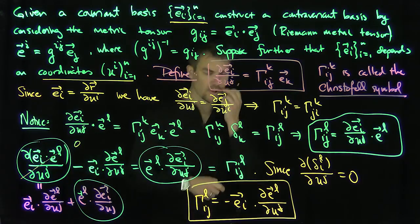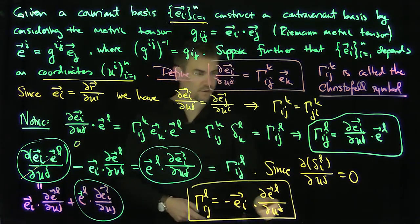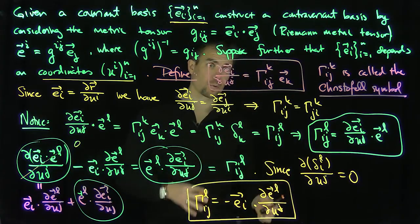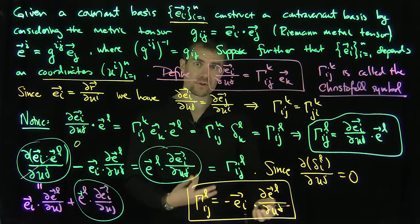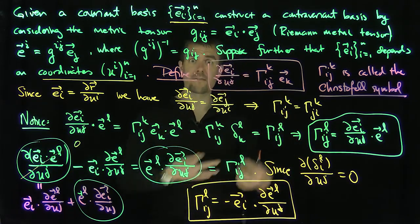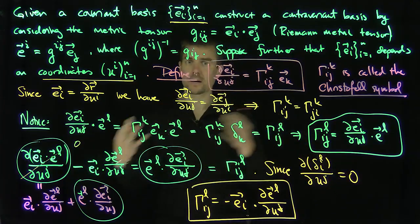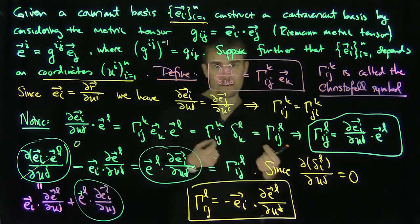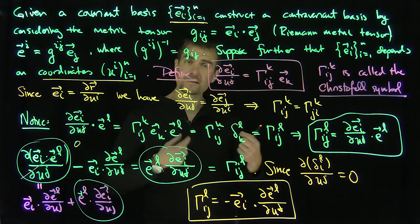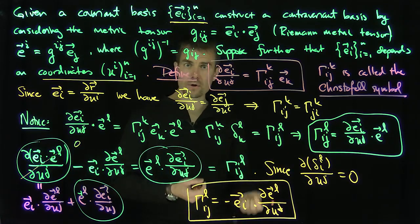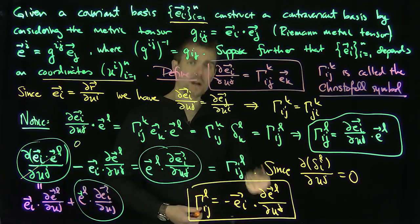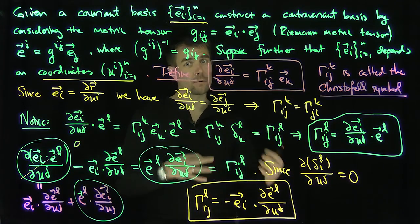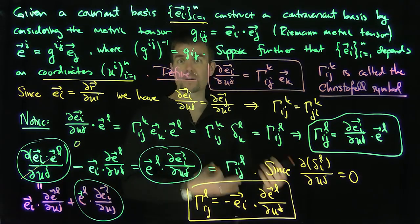An alternative way of computing Christoffel symbols is via the dot product of a covariant vector with the derivative of a contravariant vector. There's implicit symmetry in these symbols, and in further videos we'll see special formulas for repeated indices, orthogonal curvilinear coordinates, and other cases. The fundamental idea is: compute the derivative of the covariant vector e_i with respect to coordinate u^j, then dot with a contravariant component — or dot with a covariant component using the derivative of a contravariant vector. In further videos, we'll find further properties and formulas in terms of differentials of the metric tensor. Thank you very much.